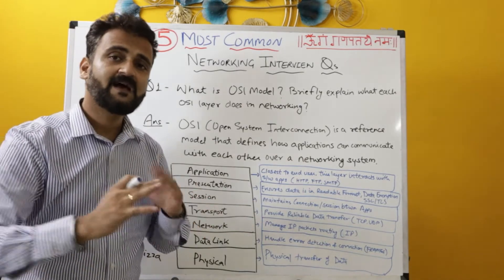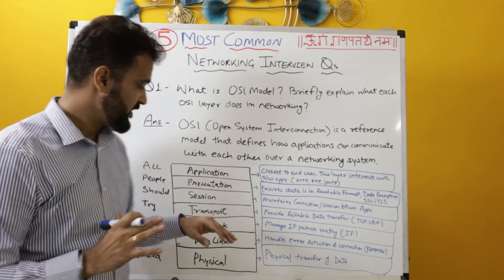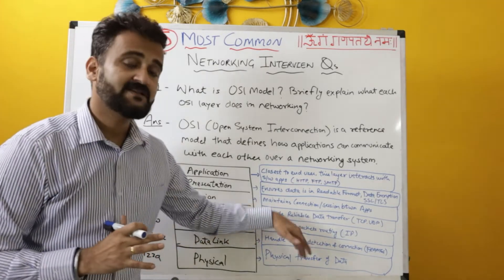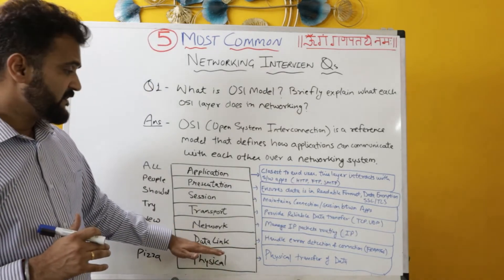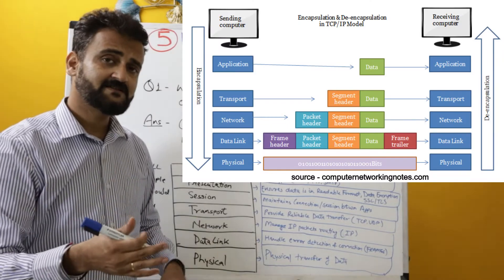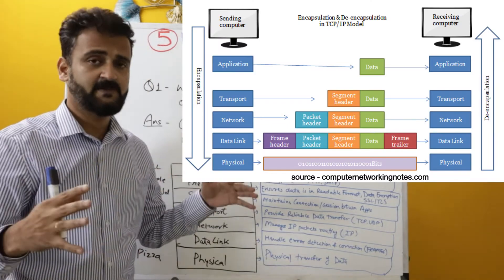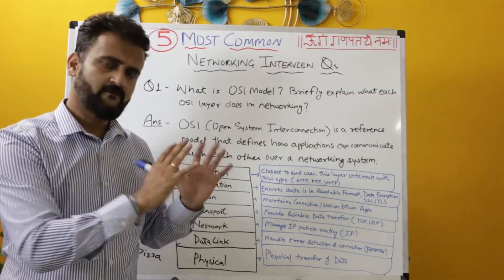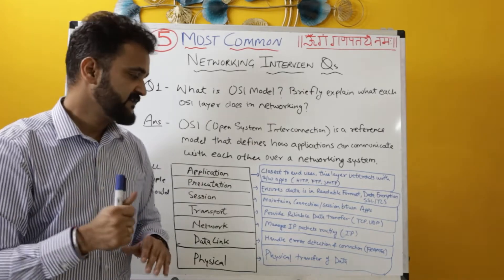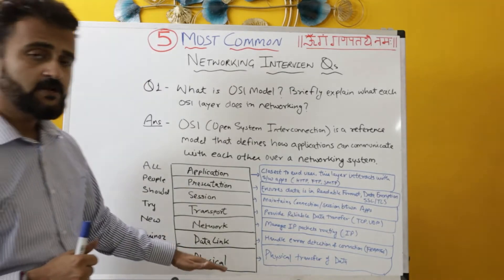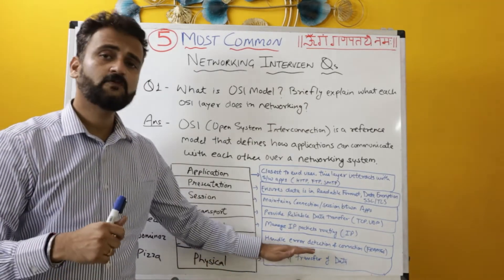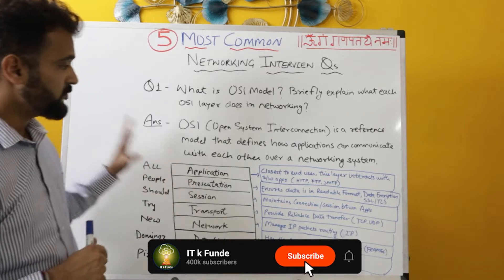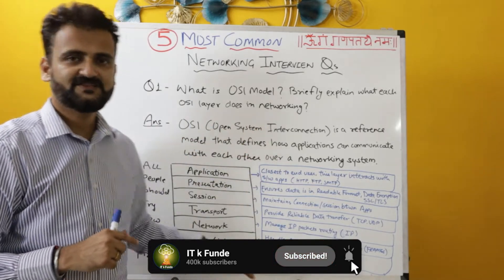The Network layer makes sure that your IP packets are routed via the routers — here you get your IP address and your IP packets are routed over the network. At the Data Link layer, you handle error detection and error correction at the frame level. If you are not well versed with this, go watch the OSI model video and it will help you understand. Finally, at the Physical layer, the physical transfer of data happens over the cable and over the network.